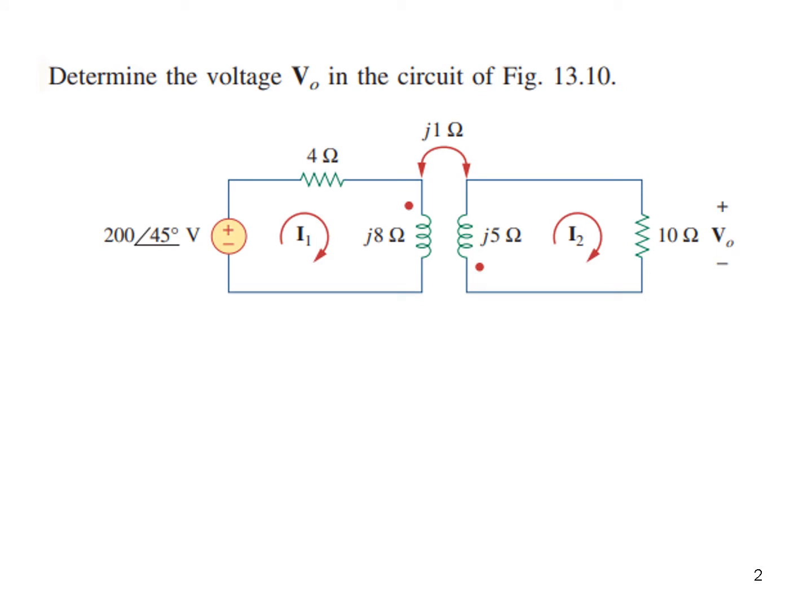So let's see. The question says determine the voltage V0. This is the voltage V0 across 10 ohm resistance, and to determine this voltage we have to find the current I2. So let's see how to proceed.